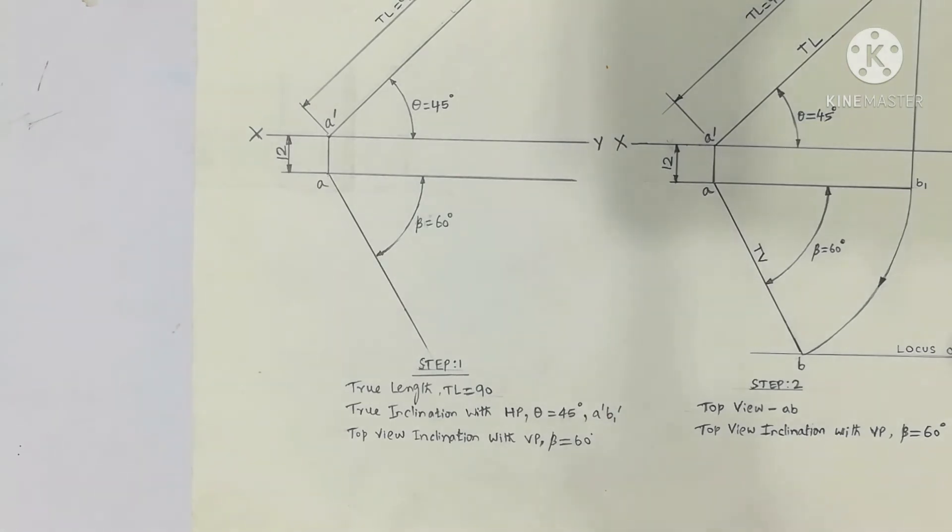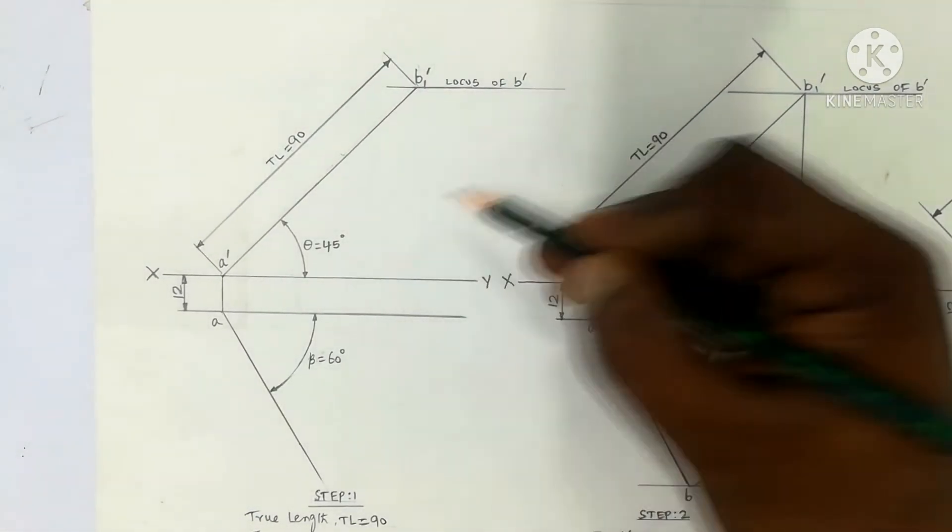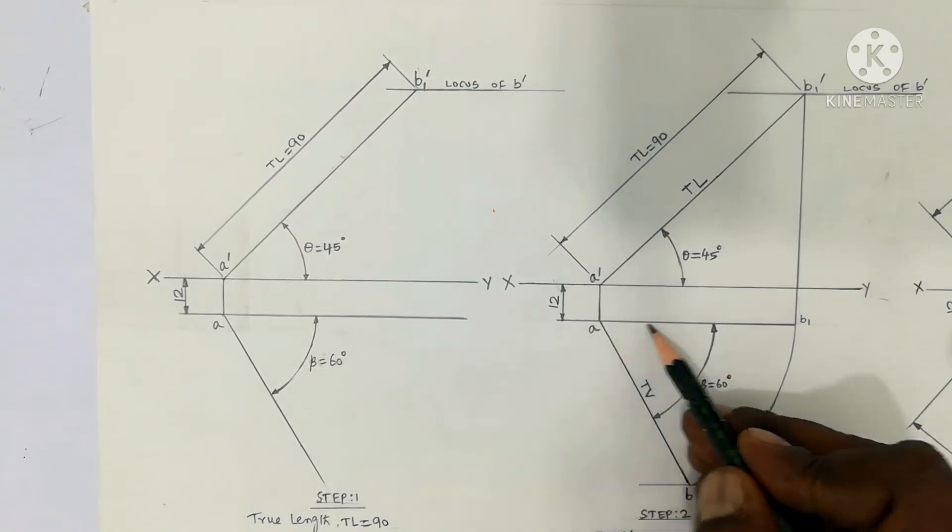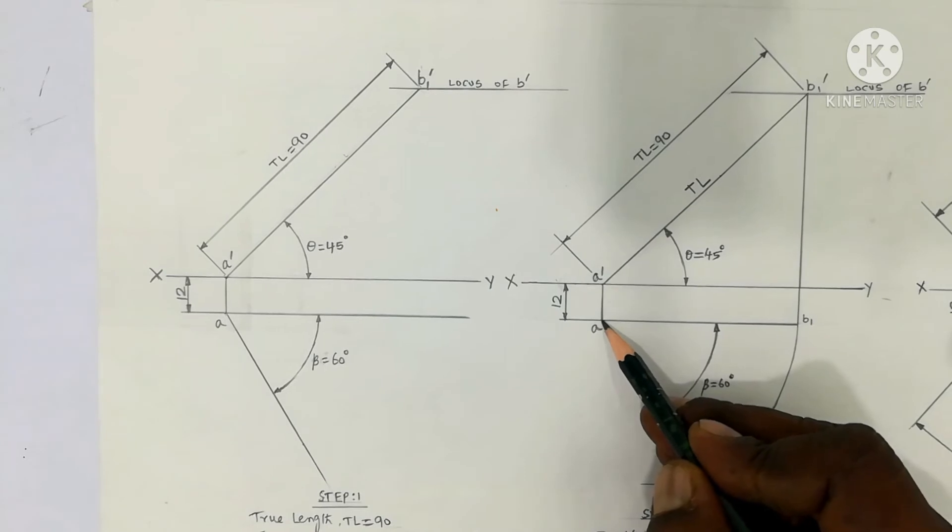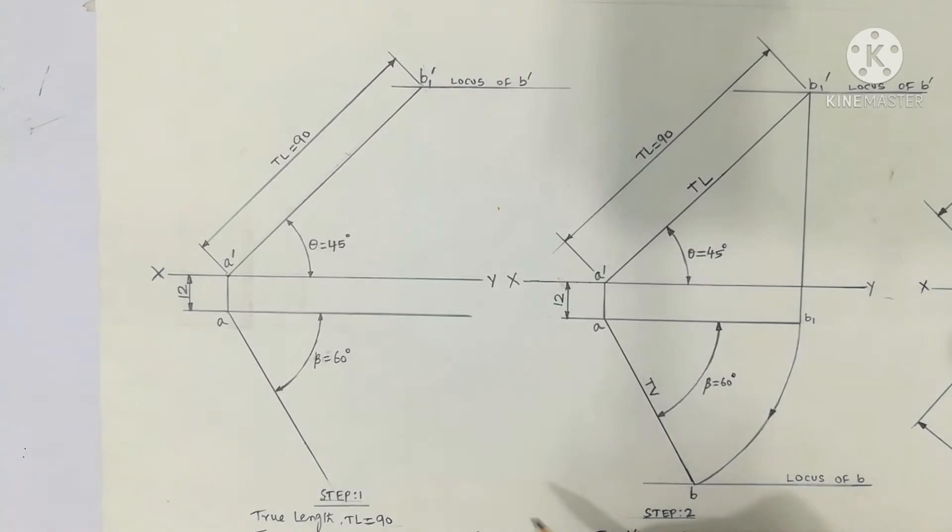So from B' draw a vertical projector. That line is this line. The horizontal line passing through A meets the point B1. Using compass, A as the center, AB1 as the radius, draw an arc downward. In the arc, the top view inclination line meets the point B. So from B' draw a locus line parallel to XY.